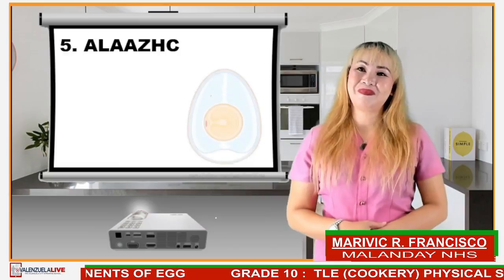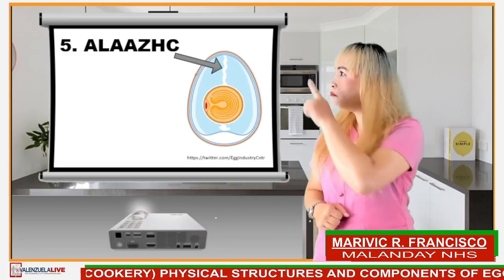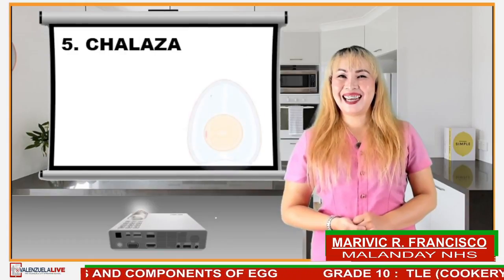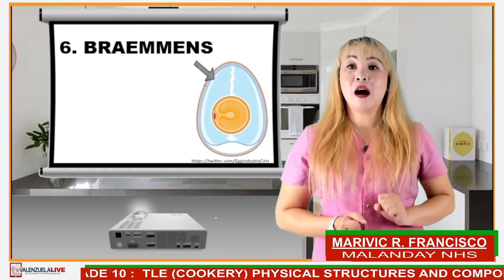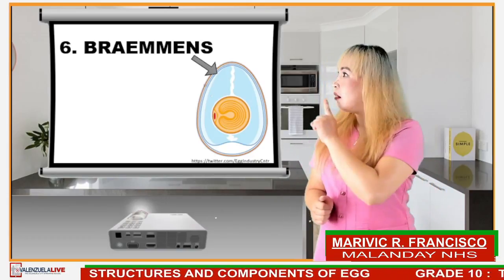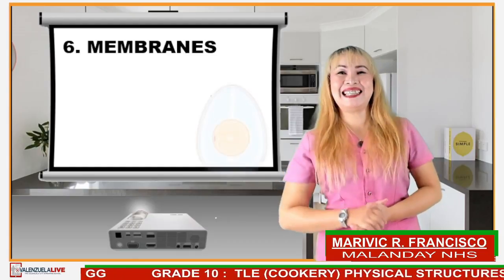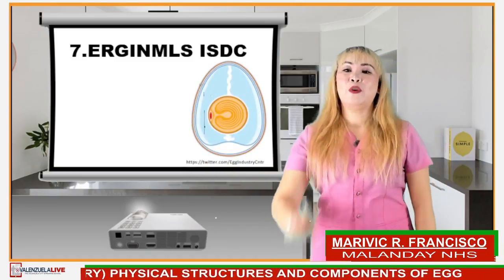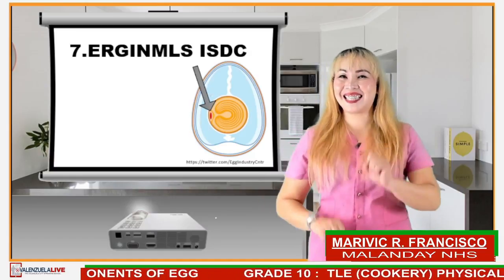Number five, the letters are B-R-A-E-M-M-E-N-S. What is the word? If your answer is membranes, then you did a great job. Correct. Number seven, the letters are E-R-G-I-N-M-L-S-I-S-D-C. What is the word?